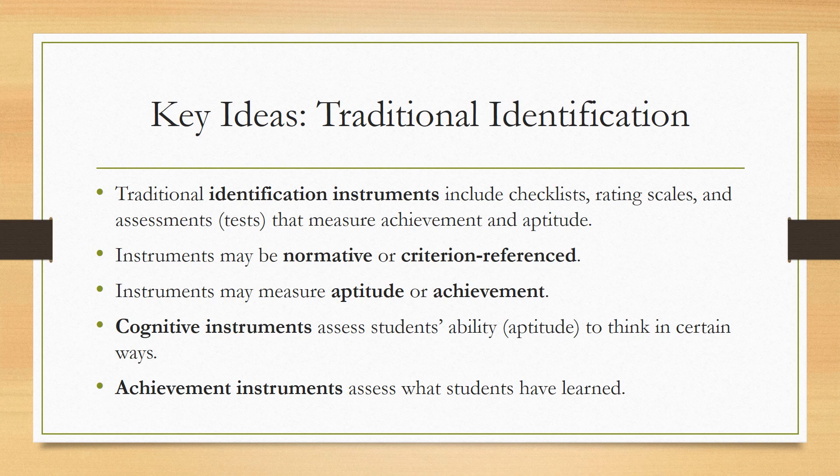To summarize: traditional identification instruments include checklists, rating scales, and assessments that measure achievement and aptitude. They may be normative or criterion-referenced. It's important to understand which your test is assessing — a high score on an aptitude test like an IQ test doesn't necessarily mean the student has learned a lot. Cognitive instruments assess students' ability or aptitude to think in certain ways, whereas achievement instruments assess what students have learned. In this week's module, you'll be applying these concepts in some work and a critical reflection. Everybody have a great week.